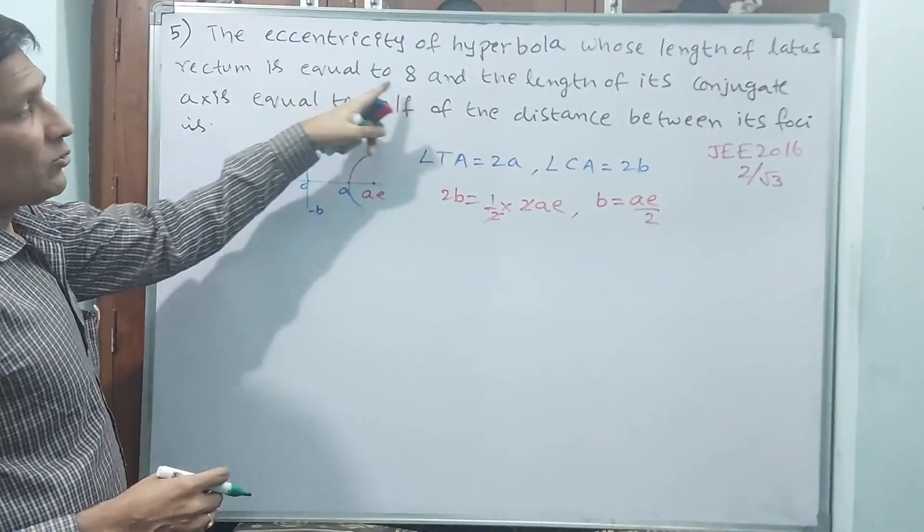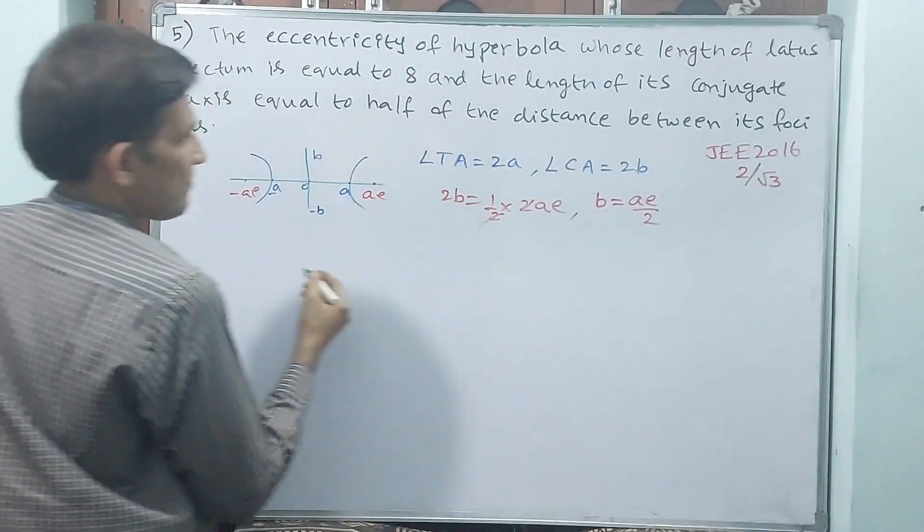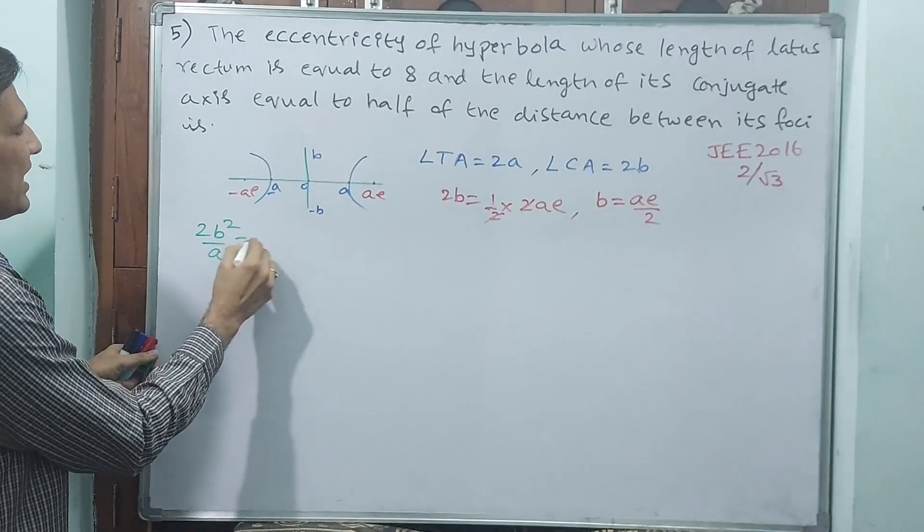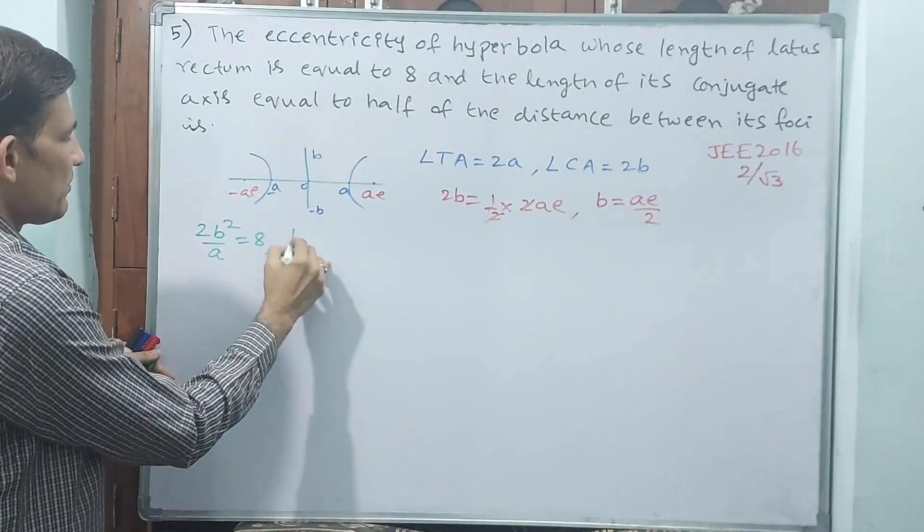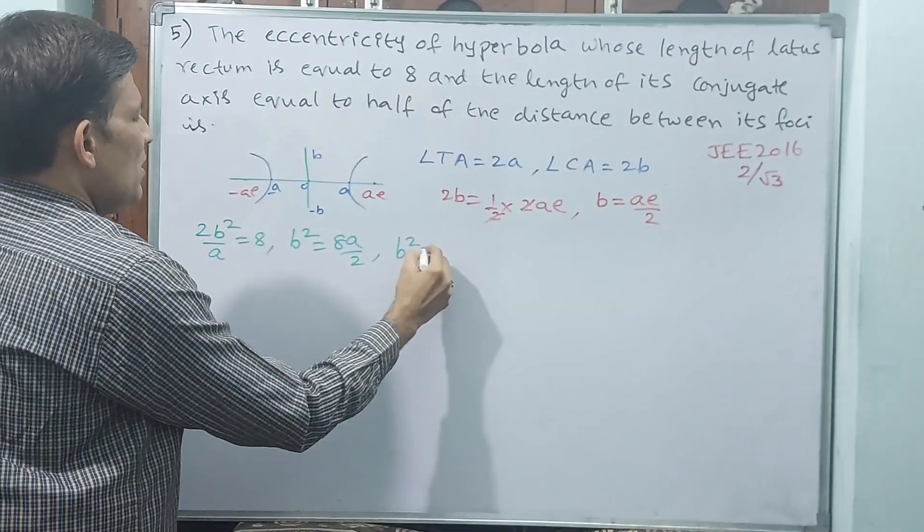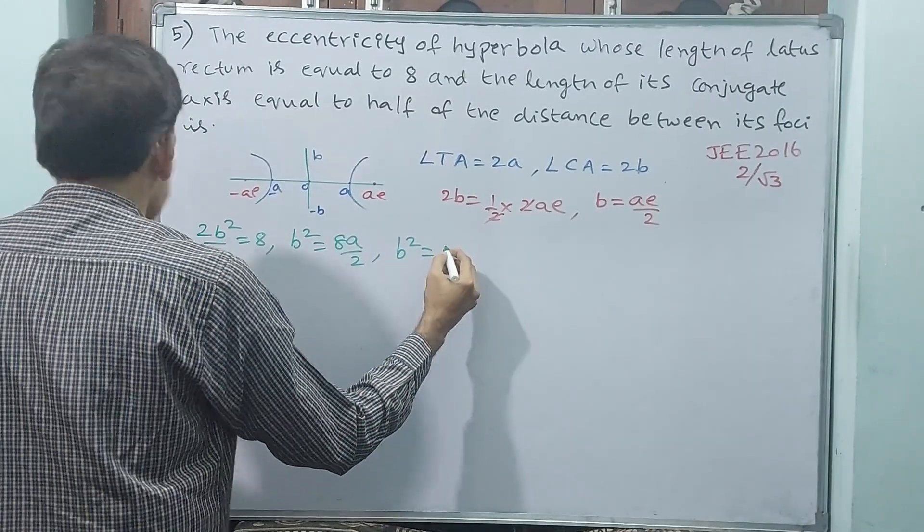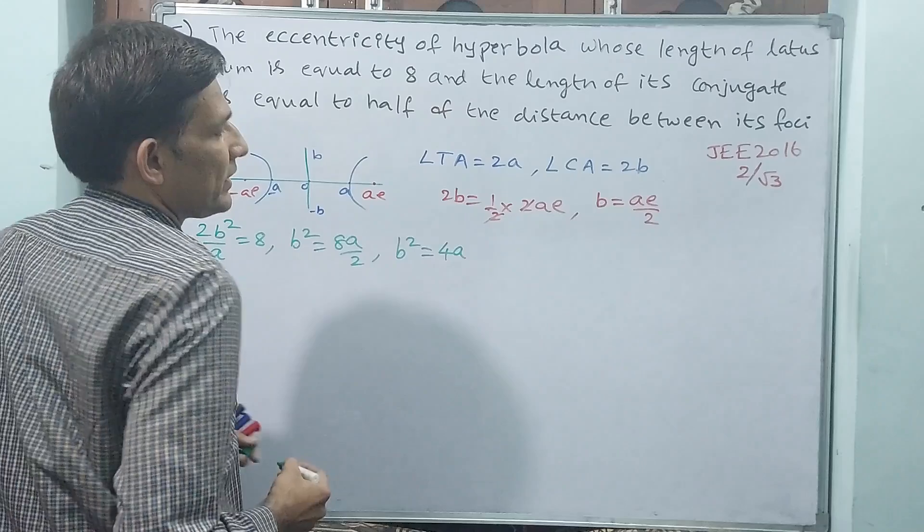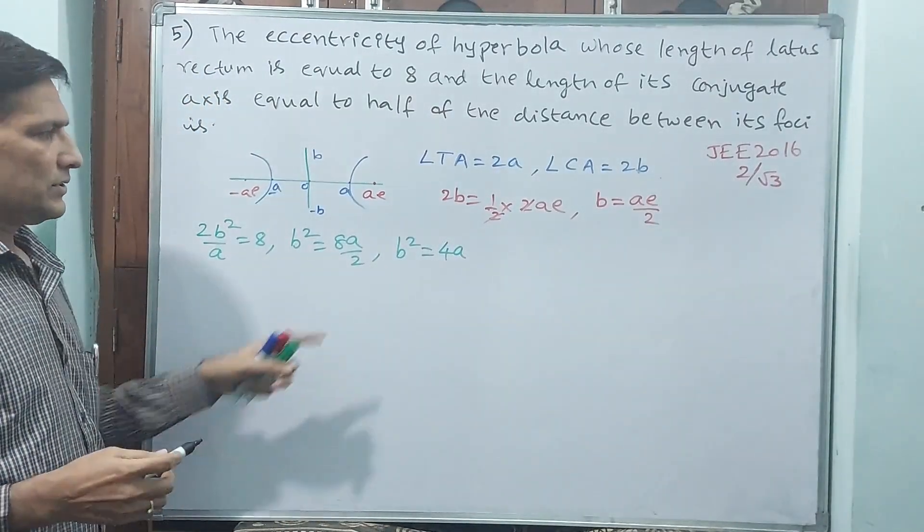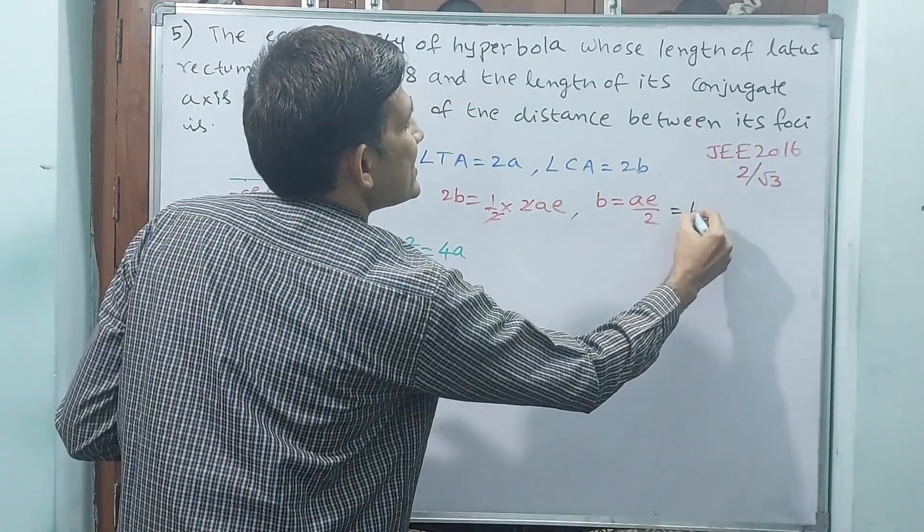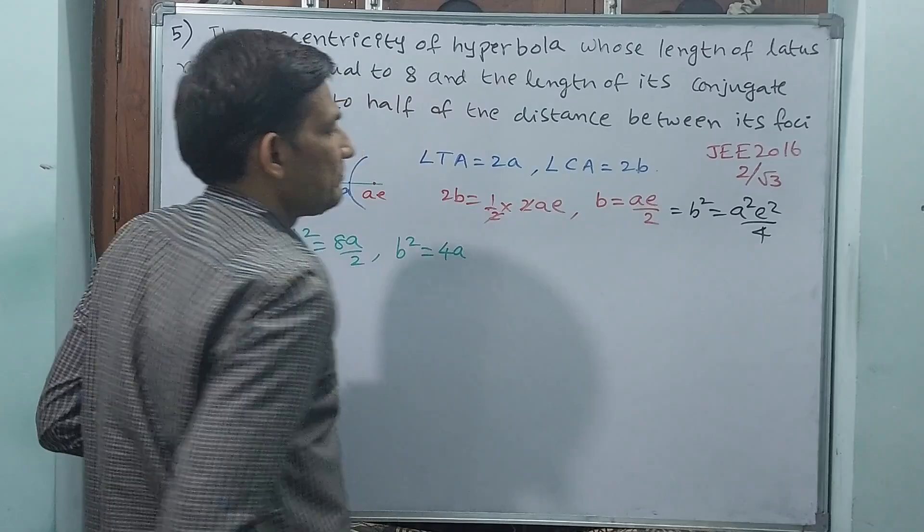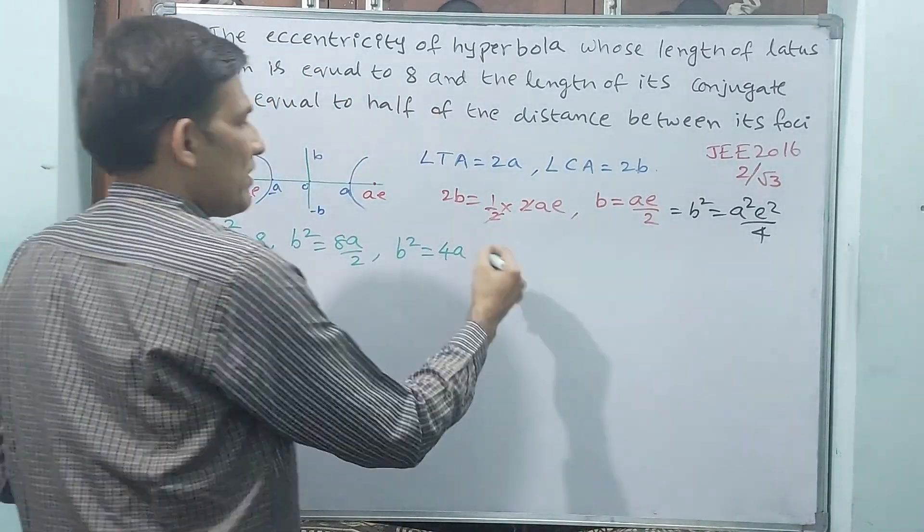Length of lateral rectum is 8. Right here, 2B square by A is equal to 8. That means B square is equal to 8A by 2. B square is equal to 4A. B square is equal to 4A. But B square is also equal to A square E square by 4.